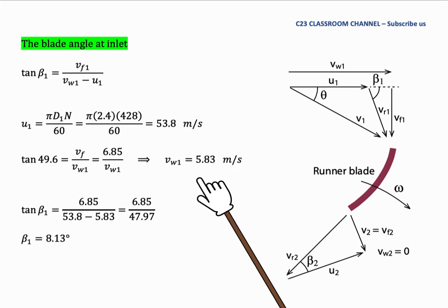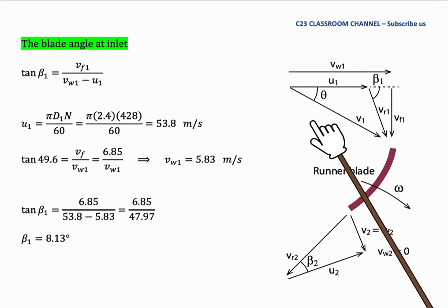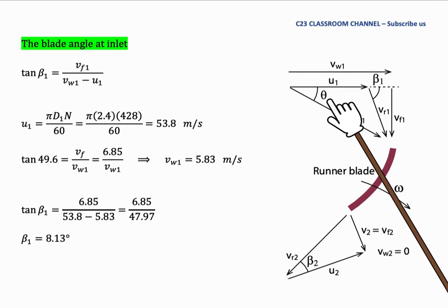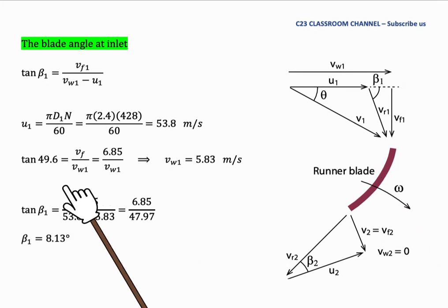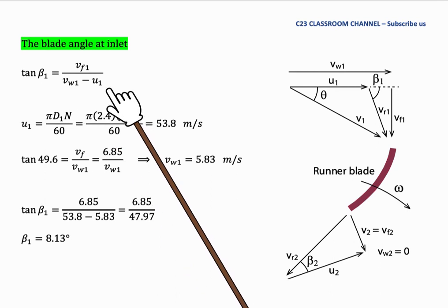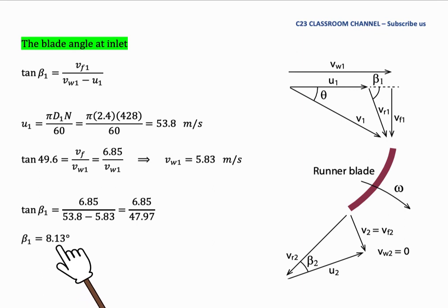Then we could calculate the velocity of VW1 here by using this equation. And we have advantage here because the tangent for θ is already calculated. It is equal to 49.6. We could use this equation to calculate VW1 here and it is equal to 5.83 meters per second. Then we substitute the value of VF1, VW1 and U1 in the equation. We could get β1 is 8.13 degrees.